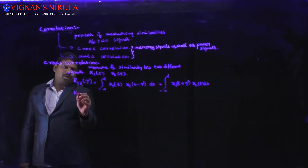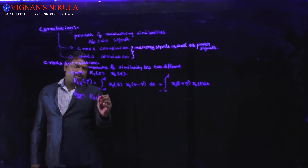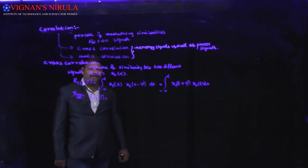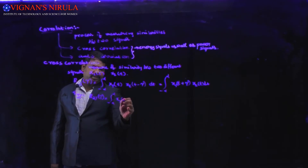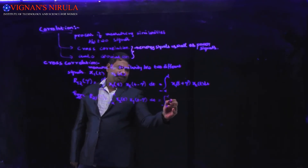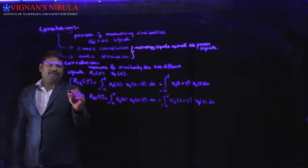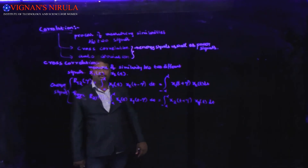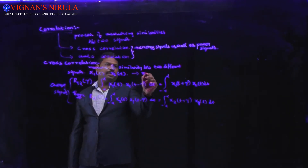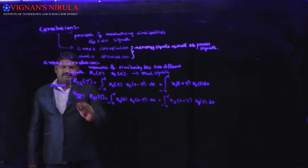Similarly, R21(τ) can be given as the integral from minus infinity to infinity of x2(t) multiplied by x1(t minus τ) dt, or alternatively as the integral of x2(t plus τ) multiplied by x1(t) dt. These are the signals defined for energy signals, as we have taken the integration from minus infinity to plus infinity, considering these signals as real signals only with no complex nature.